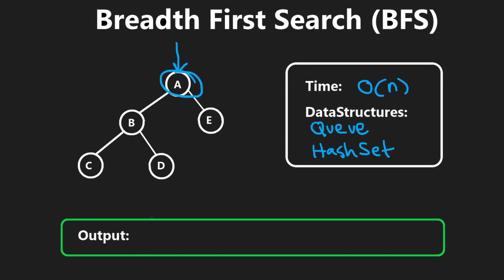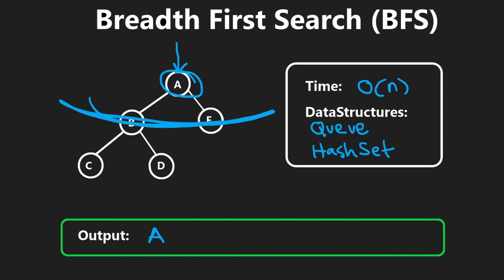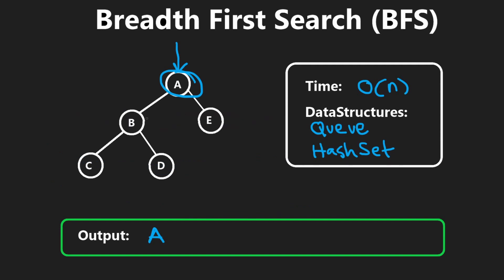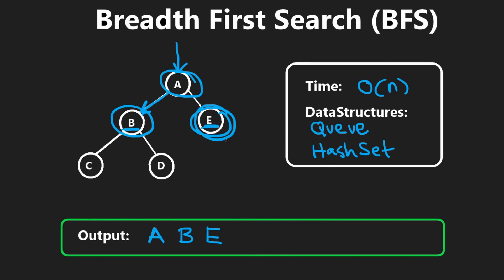BFS is kind of the opposite of DFS. Starting at node A, instead of going as deep as possible in one direction, we traverse layer by layer. We add A to the output, then process everything in the next layer: B, then E. Then we move to the following layer: C, then D. The final output is A, B, E, C, D — a different ordering than DFS.